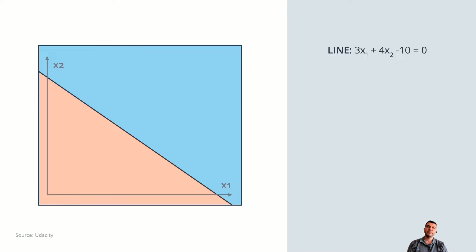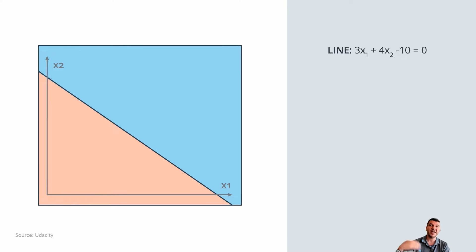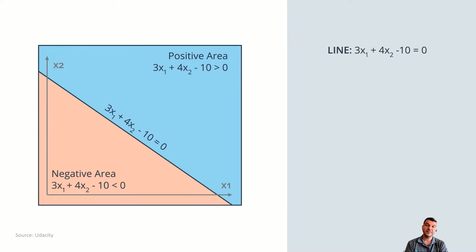Let's start with a random line. In terms of x and y, the line would be 3x + 4y − 10. Since we're talking from a neural network perspective, we have inputs x1 and x2, so our line is defined by 3x1 + 4x2 − 10. This line cuts everything in two halves: the blue half, which is anything that calculates above zero, and the red half, which is anything below zero.